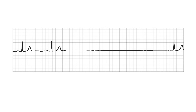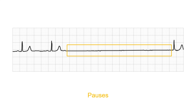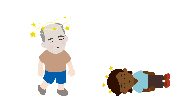The final common finding to highlight are pauses. These can be caused by sinus arrest or sinoatrial block, in which case P-waves are absent, or due to atrioventricular block, in which case you will see evidence of atrial activity but no ventricular activity. Either way, pauses cause a cessation of ventricular activity for a period of time and can often be associated with dizziness and syncope.